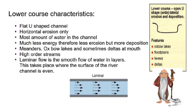The lower course characteristics — here we're looking at the old age stage of the river. The shape of the channel is now a flat U-shape, and that's because there is horizontal erosion only; there's no more vertical erosion. There's a lot more water in the channel and a lot less energy, so there's more deposition than erosion. There are a couple of other features characteristic of the lower course: meanders, oxbow lakes, and deltas — we're going to look at those in another lesson. Higher-order streams: fives and sixes. The type of flow is laminar flow — it actually looks like a mirror, smooth flow with water flowing in layers, and sometimes you have to look carefully to see that it's even flowing.